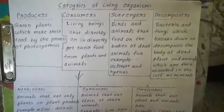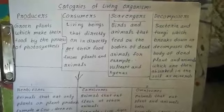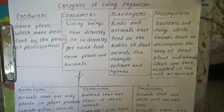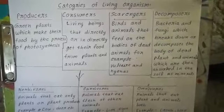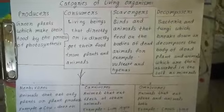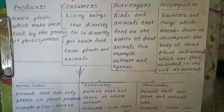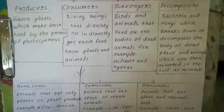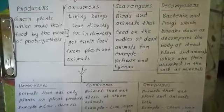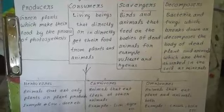Producers: green plants which make their food by the process of photosynthesis. Consumers: living beings that directly or indirectly get their food from plants and animals. Scavengers: birds and animals that feed on the bodies of dead animals, for example vultures and hyenas. Decomposers: bacteria and fungi which break down or decompose the bodies of dead plants and animals, which are then absorbed into the soil as minerals.